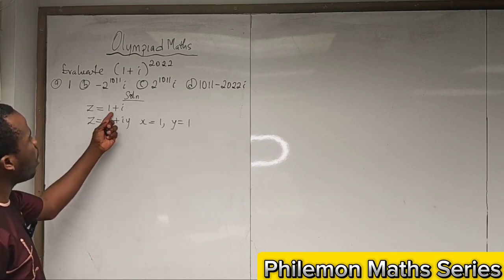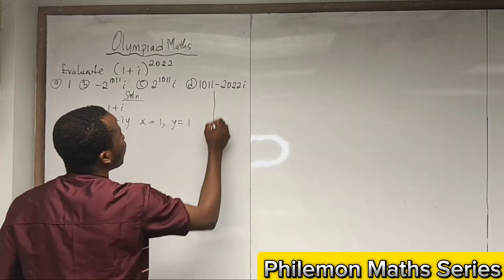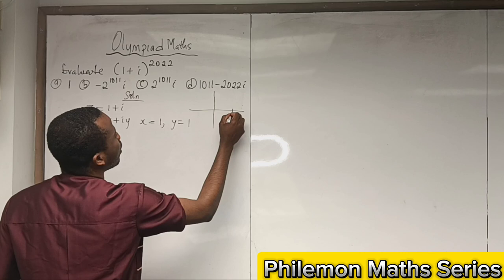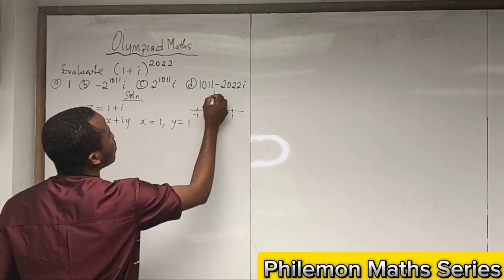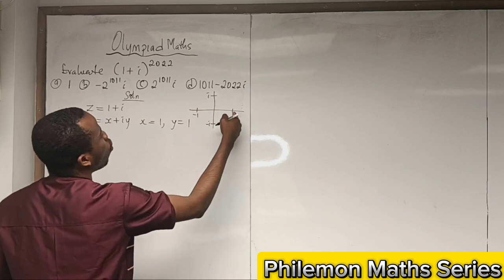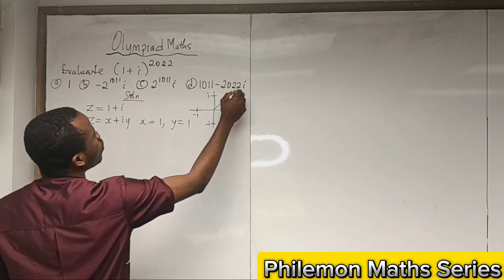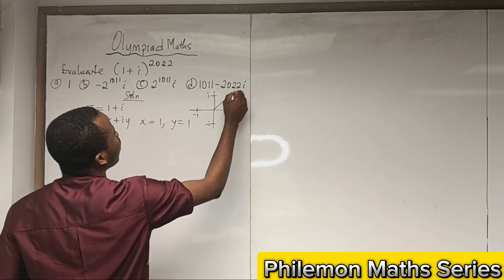Because we have 1 + i, this should be in the first quadrant. If we graph it, here is 1, -1, i, -i. So 1 and i will be at this point. So this is our 1 + i, this is the graph of it.